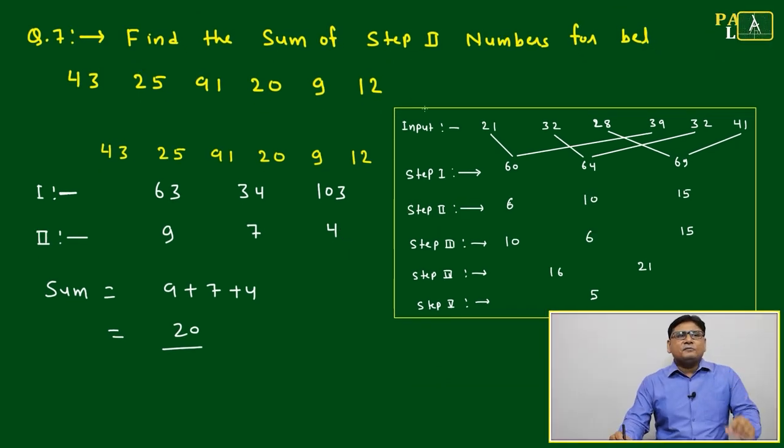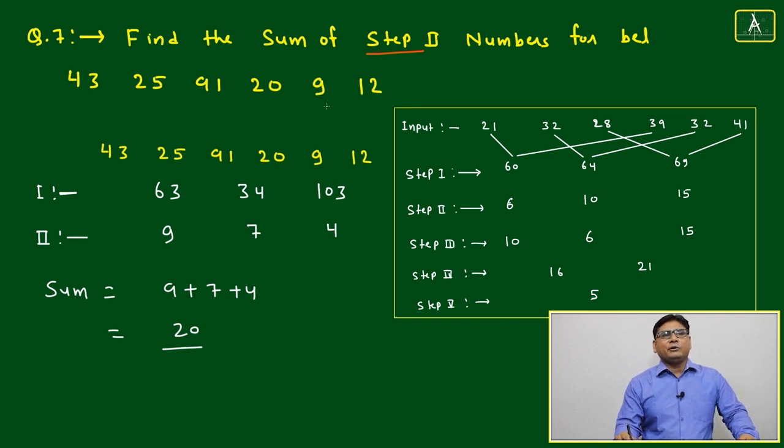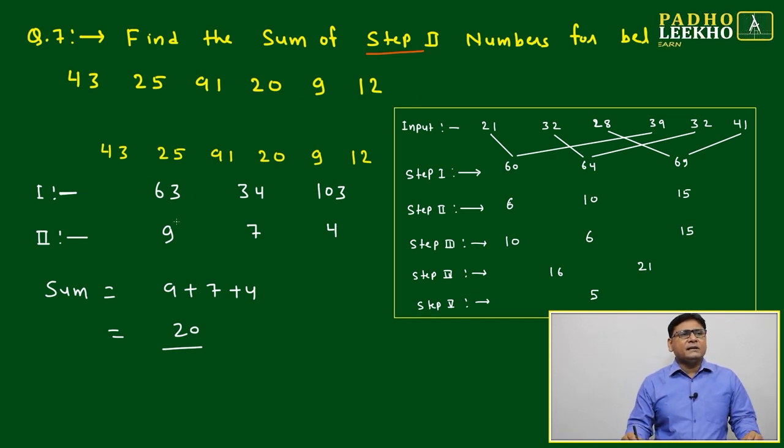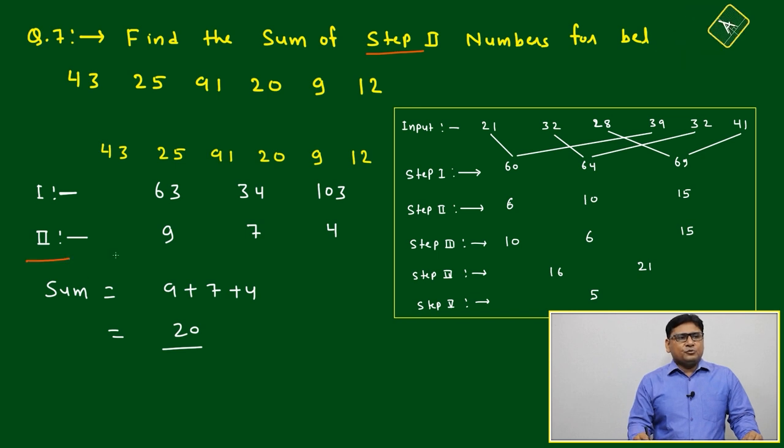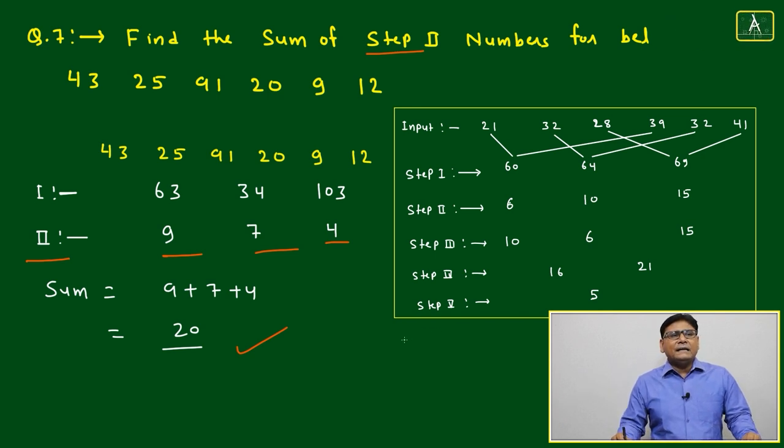Find the sum of step 2 numbers for below input: 43, 25, 91, 20, 9, and 12. This is given. Just we will do. Up to step 2, we got 9, 7, and 4. Just you have to add 9 plus 7 plus 4. It is coming 20.